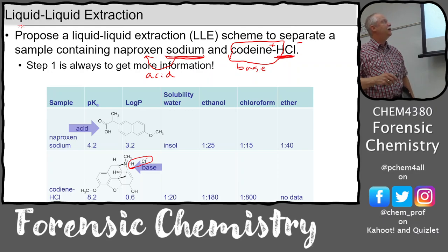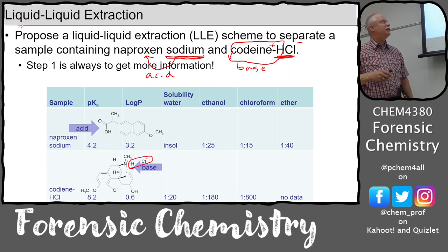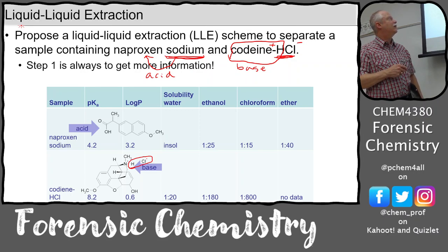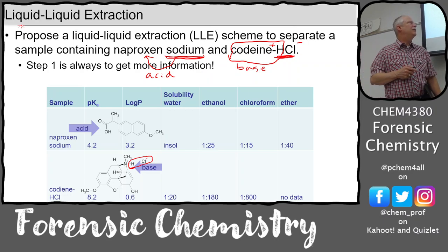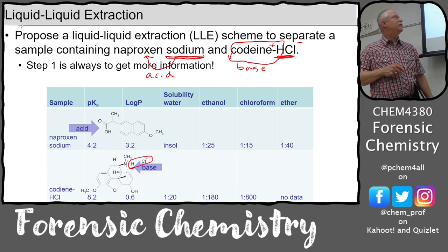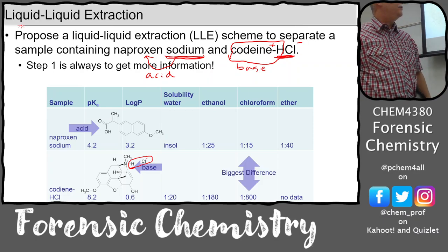There's also solubility information. Naproxen — the acid form — is insoluble in water, but ionized with sodium it is soluble. There's also a log P value — that's the octanol-water partition coefficient on a log scale — telling you it's much more interested in the octanol layer than the water. The solubility shows roughly one gram to 15 grams of chloroform for naproxen, versus one gram to 800 grams for codeine. That's a really good difference — high solubility versus low solubility in chloroform — so we can exploit that and use chloroform as our organic layer.